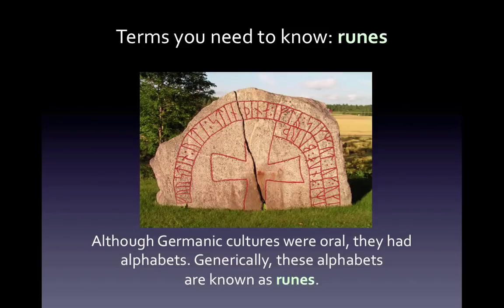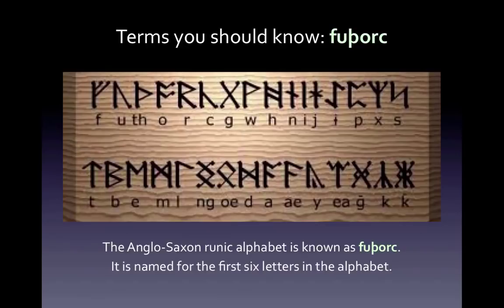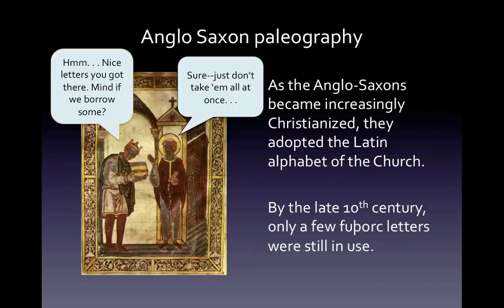The Anglo-Saxons had their own runic alphabet, which they called Futhork, named after the first six letters of the alphabet. The third of those letters is called Thorn, and I'll talk about it in a minute. The Anglo-Saxons developed Futhork shortly after they arrived on the island of Britannia sometime in the 5th century. But by the 8th century, as they became increasingly Christianized, the Anglo-Saxons began to slowly adopt the missionary's Latin alphabet — the alphabet of the church and the alphabet that you and I use today. By the time the monks transcribed Beowulf in the late 10th or early 11th century, only a few Futhork letters were still in use.